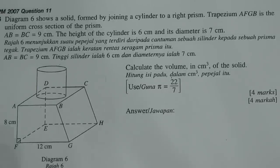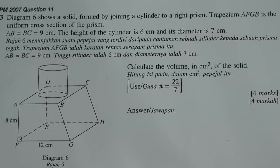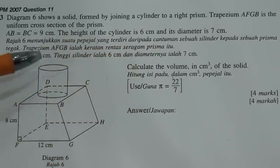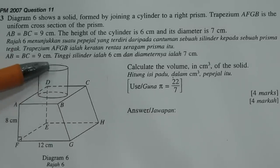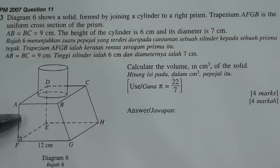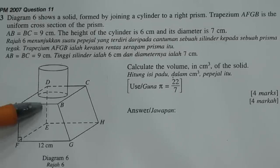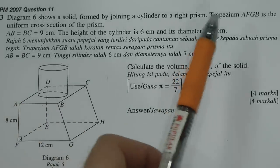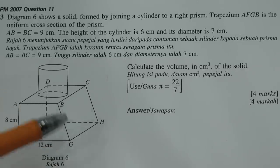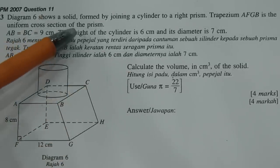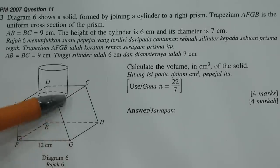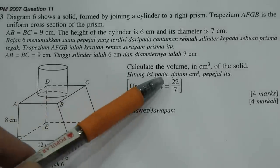Let's have a look at this question. Diagram six shows a solid formed by joining a cylinder to a right prism. The right prism has 90-degree angles and a trapezium cross-section AFGB. The uniform cross-section means the front area is the same as the area behind it. He asks you to calculate the volume in centimeter cubes of the solid.